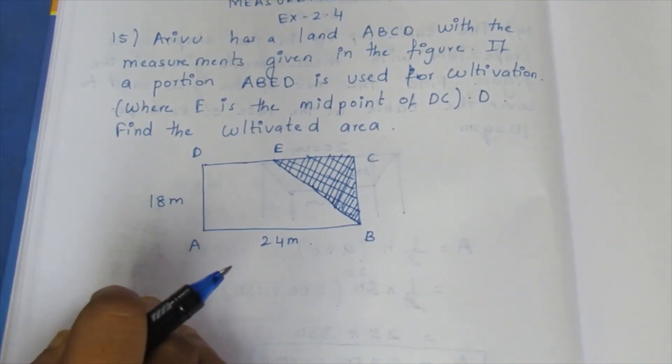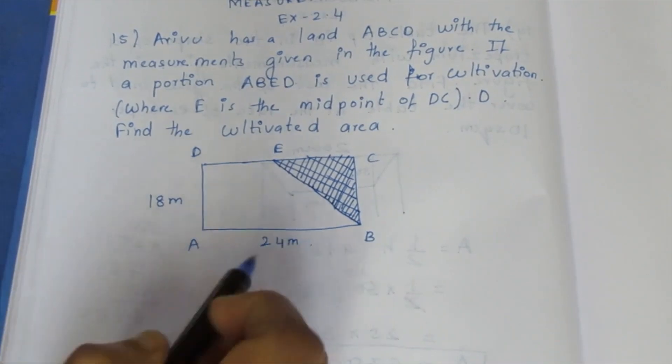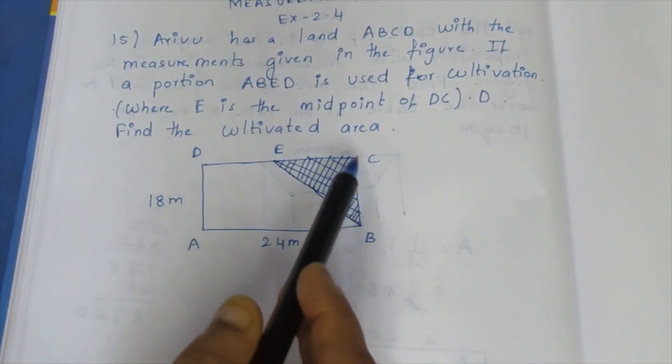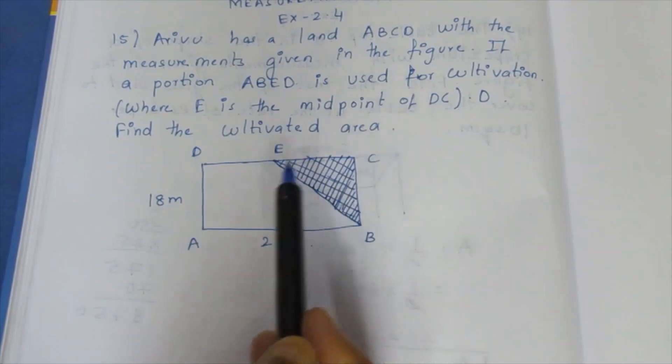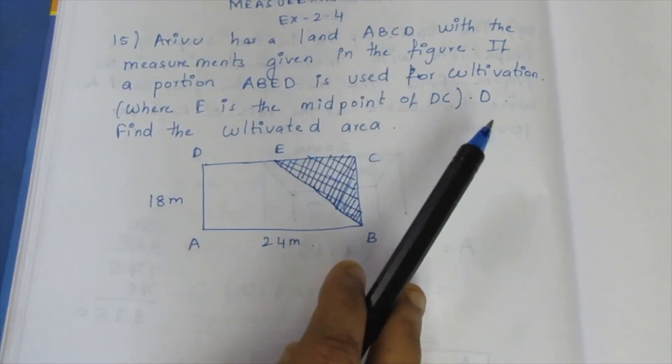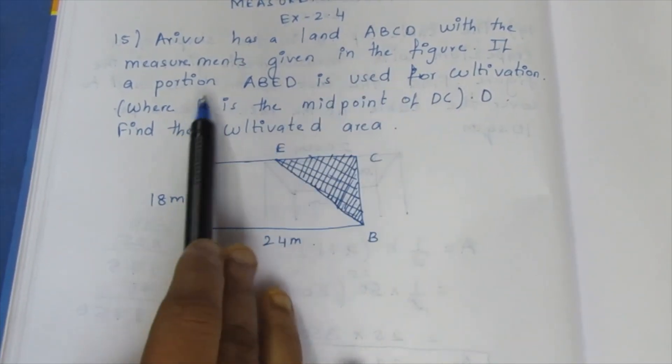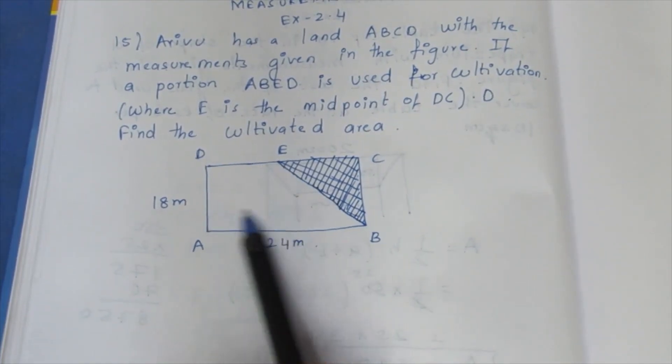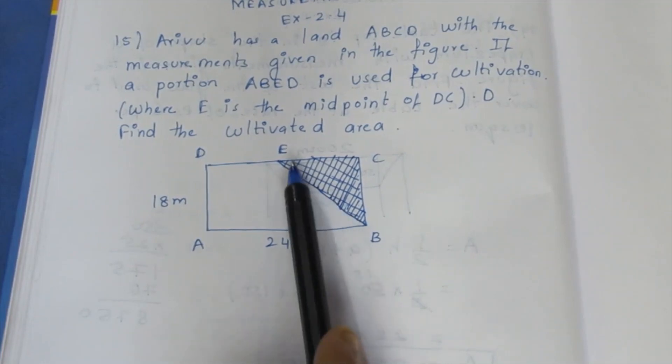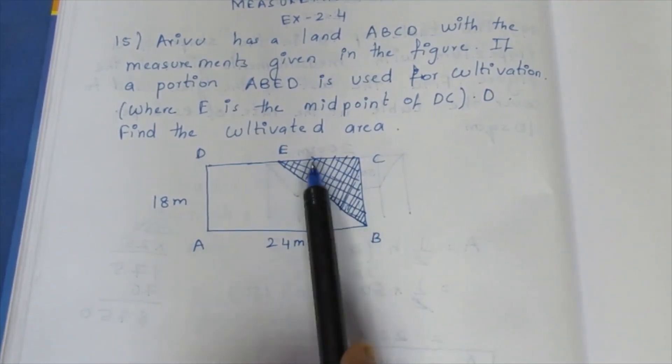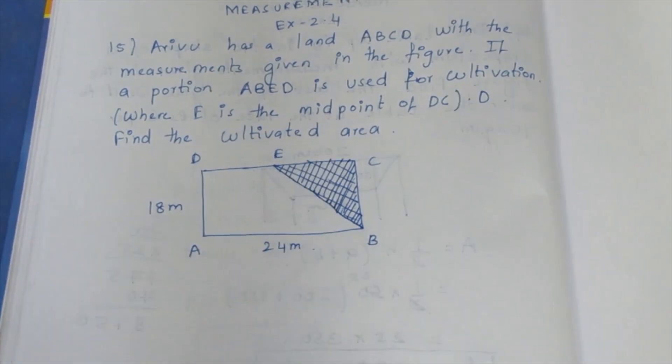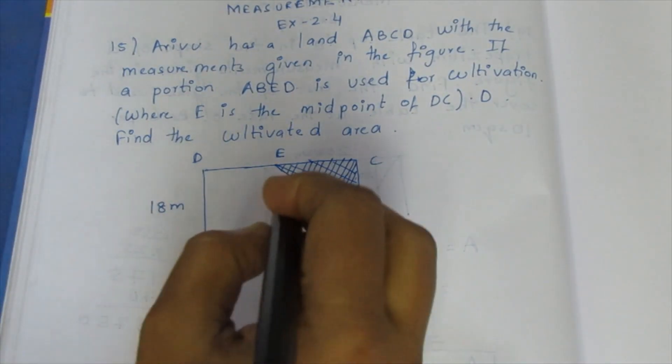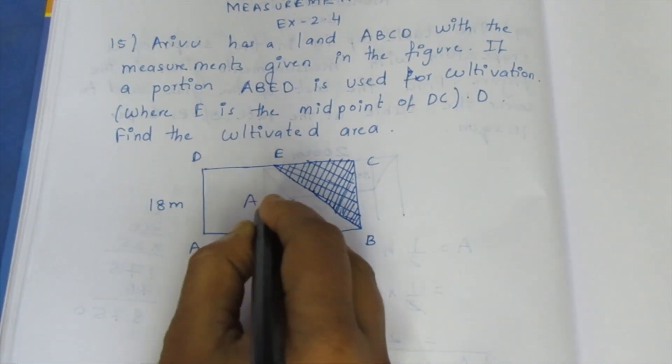Arthu has a land ABCD with the measurements given in the figure. If a portion ABED is used for cultivation, where E is the midpoint of side DC, find the cultivated area.